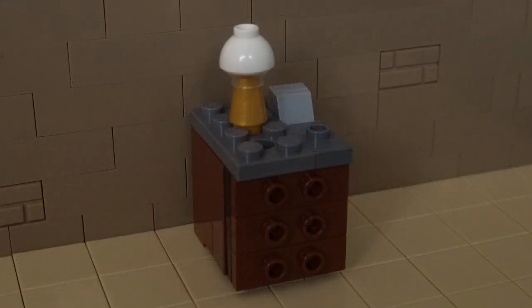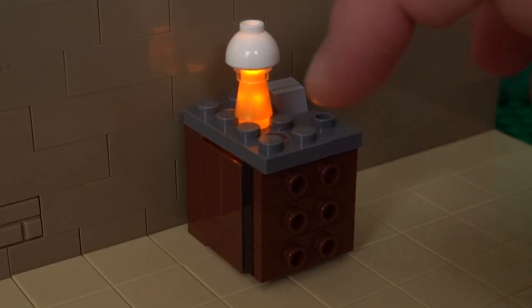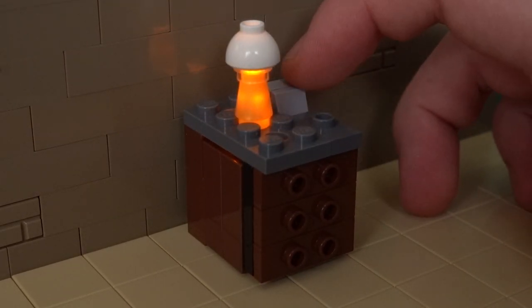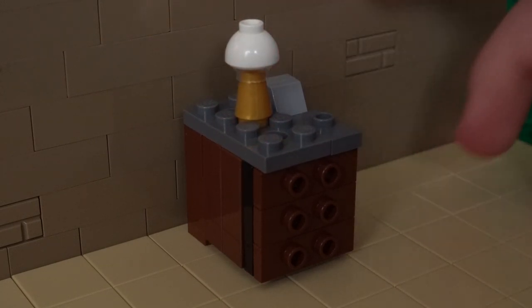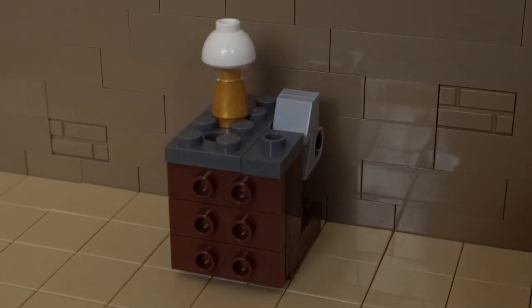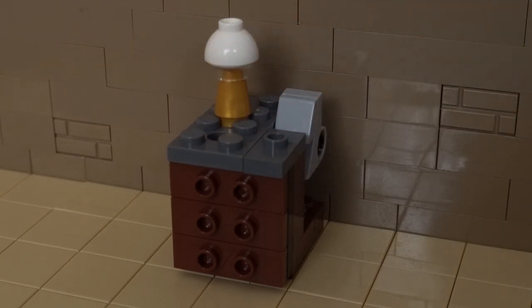So how does this actually work? When you push the switch on the top, that in turn presses down a light brick inside the cabinet, and you can see that's what's responsible for lighting up the lamp on the table. And this way you also have the benefit of just being able to leave the light switched on without having to constantly press it down.